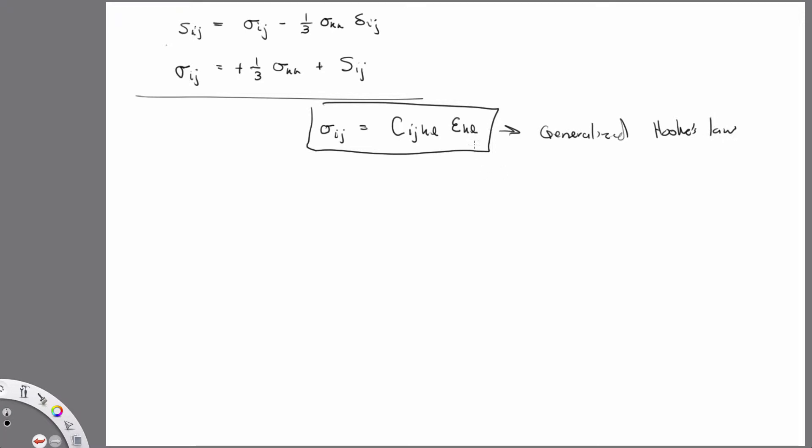And I think I mentioned that because the strain tensor is symmetric, then that imposes symmetry on k and l. So Cijkl is equal to Cijlk. And because the stress tensor is symmetric, that imposes symmetry on i and j. So Cijkl is equal to Cjikl.